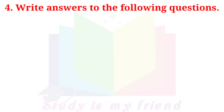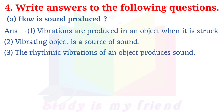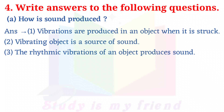Write answers to the following questions. A. How is sound produced? Answer: Vibrations are produced in an object when it is struck. A vibrating object is a source of sound. The rhythmic vibrations of an object produce sound.